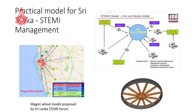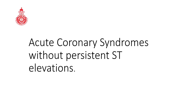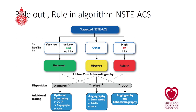Moving to acute coronary syndromes without persistent ST elevations: no ST elevations with positive troponin is non-STEMI; negative troponins with typical history is unstable angina. In unstable angina, remember that troponins are negative and the ECG may be normal — if you are not vigilant about history, you can miss the diagnosis. Keep in mind non-cardiac causes as well.